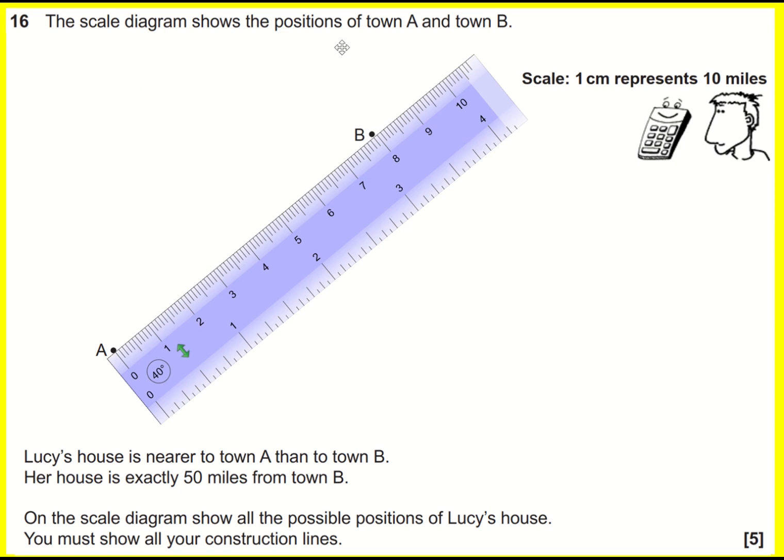We're told we've got positions Town A and B, and Lucy's house is nearer to Town A than to Town B, and her house is exactly 50 miles from Town B. On the scale diagram we have to show all the possible positions of Lucy's house.